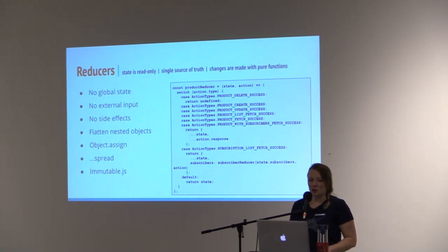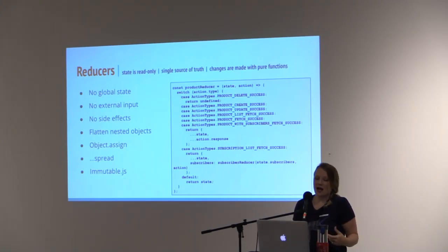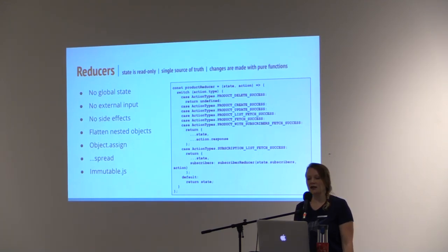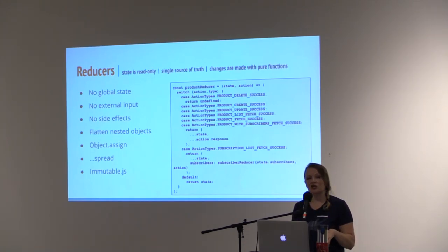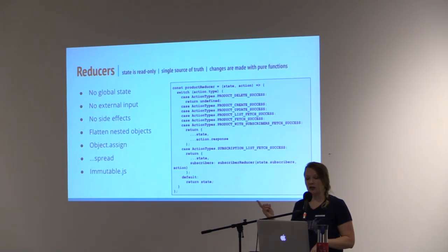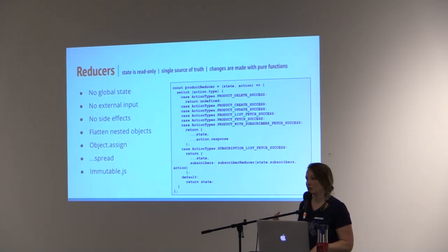Another option is Immutable.js — properties of objects like Maps are hidden behind a get/set interface, therefore they cannot be accessed directly or modified. Similarly, an immutable stack can only be modified with a push or pop. Whatever method you choose, ensure that you do not mutate the state. This is one of the three main principles in Redux: that the state is read-only, that there is a single source of truth, and that pure functions are used to make modifications to the application's state.